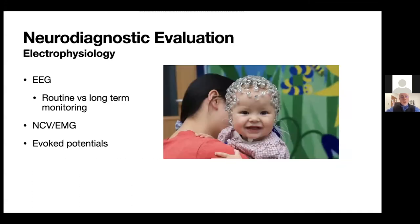We can also get neurophysiological testing: EEGs, either routine or prolonged monitoring if we have concerns for seizures. If we have concerns for a peripheral process, we'll get a nerve conduction study or EMG. Or we can do evoked potentials, which are mostly used in pediatrics for brainstem auditory evoked potentials to assess children's hearing.